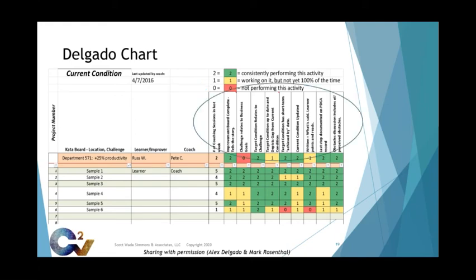The numbers allow for scoring, and the colors help us immediately see gaps as well as achievement. The activities are the ones important to Alex's organization and what they were striving to achieve with their Kata deployment and learner and coach skill development goals. They chose activities like number of coaching sessions held within the last week. This helps them see target versus actual if the expectation is daily coaching sessions. Another activity is target condition is up-to-date and depicts gaps from the current condition. This activity is an indication the learner is consistently updating their storyboard to match what is actually happening, and the documentation of the current condition versus the target condition is clear enough to see the gap. This chart is a great tool for the second coach to use when updating leadership on how the improvement work is going and keeps a focus on developing skills and capabilities throughout the organization.